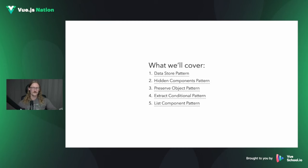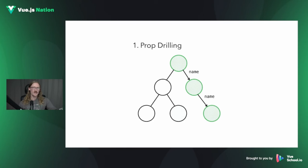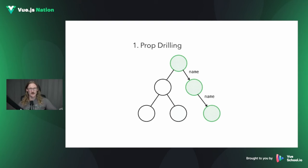First up we've got the data store pattern, and this comes up because we have three main problems when we're dealing with state moving around in our application between components. We've got prop drilling, event frothing, and also cousin components. Prop drilling is when we've got a prop and we're passing it through layer after layer of component, and we only use it at the very bottom level — the middle layers are not really doing anything useful other than just passing it along.